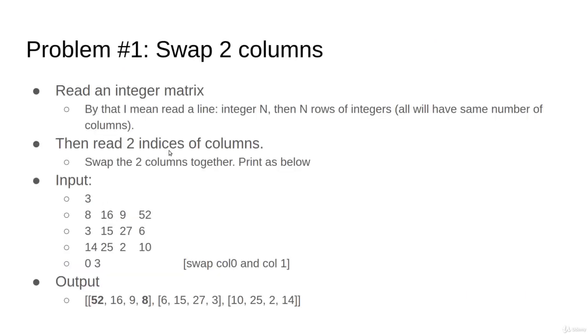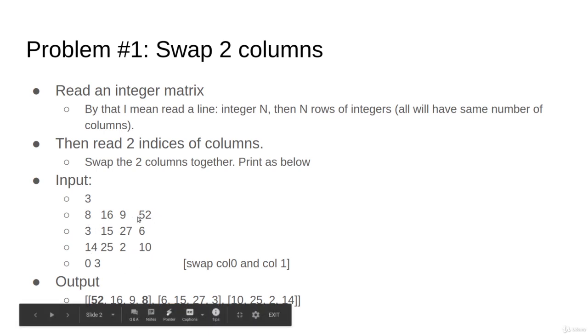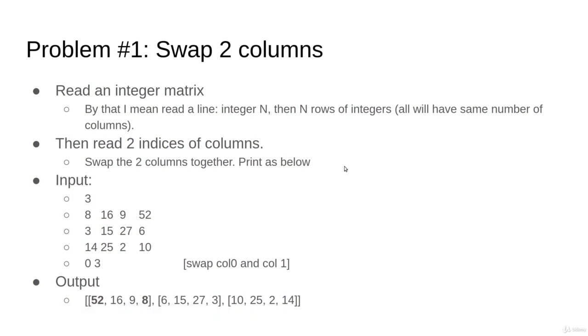Homework set number one, problem number one. You will read an integer matrix. By that I mean you will read integer N, then N rows with the same number of columns. You are requested to swap two columns. For example, here you read this matrix and then I am asking to swap the first column with the last column. Observe here, like 8 and 52 will be swapped, and so on. This whole column will be swapped with this column, and then print the final list of lists.